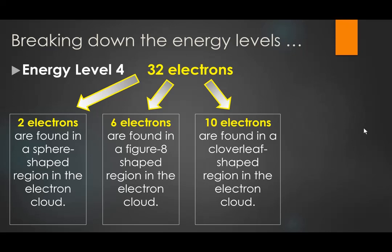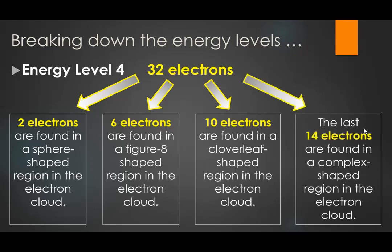The other 14 electrons in level 4 are found in a very complex-shaped region — there's quite a bit of variation in those shapes. We use the term 'orbital' to describe the region where an electron tends to be found. Electrons move in a much more complex way than a planet's orbit, but we describe their path as an orbital — a three-dimensional shape. So we have four descriptions: sphere, figure-8, cloverleaf, and complex-shaped.